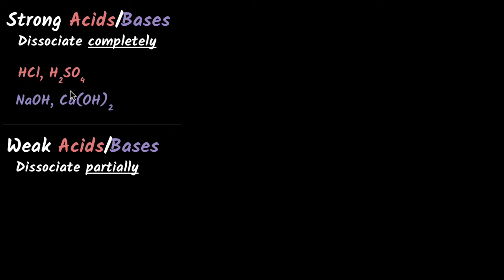Similarly, if you take bases like NaOH or calcium hydroxide, you will see that they would completely dissociate — for example, NaOH would completely dissociate into Na⁺ ions and OH⁻ ions, and that's why these are called strong bases.